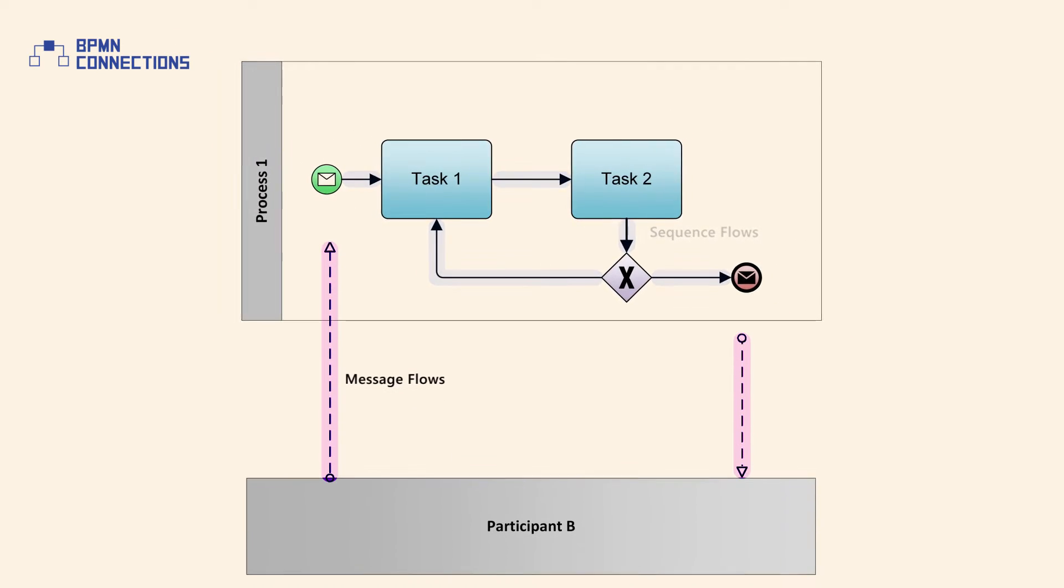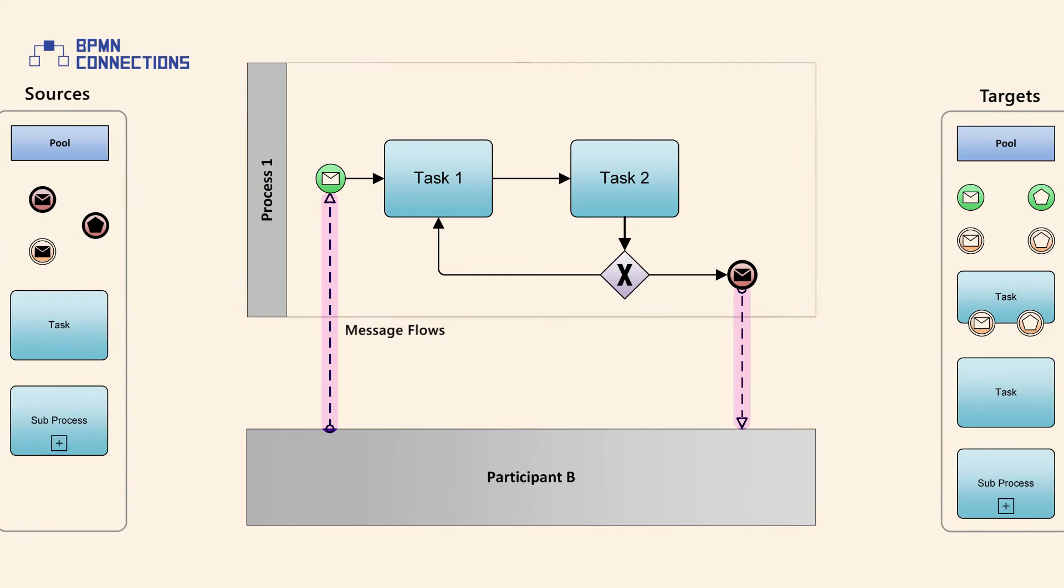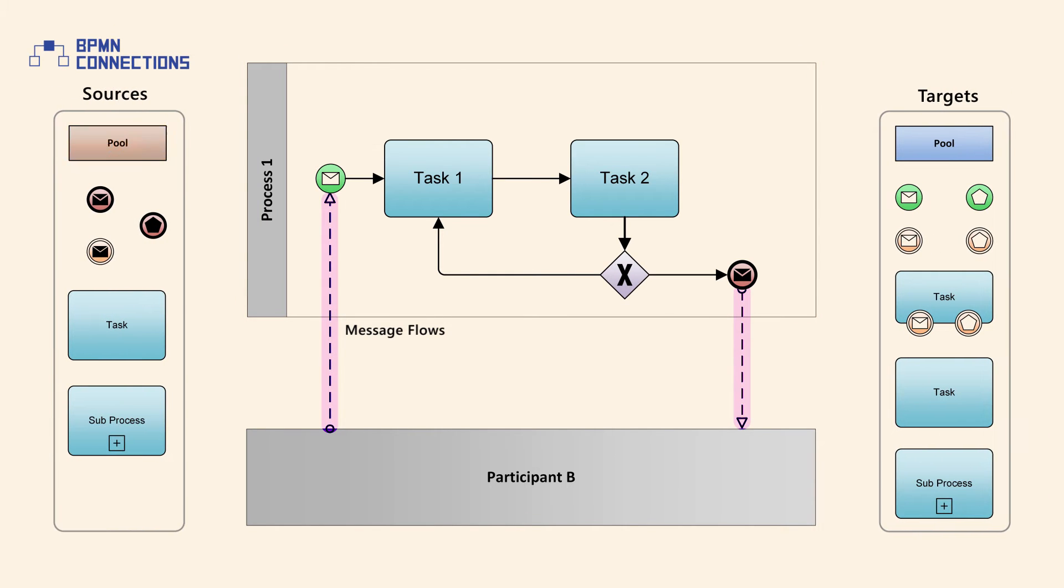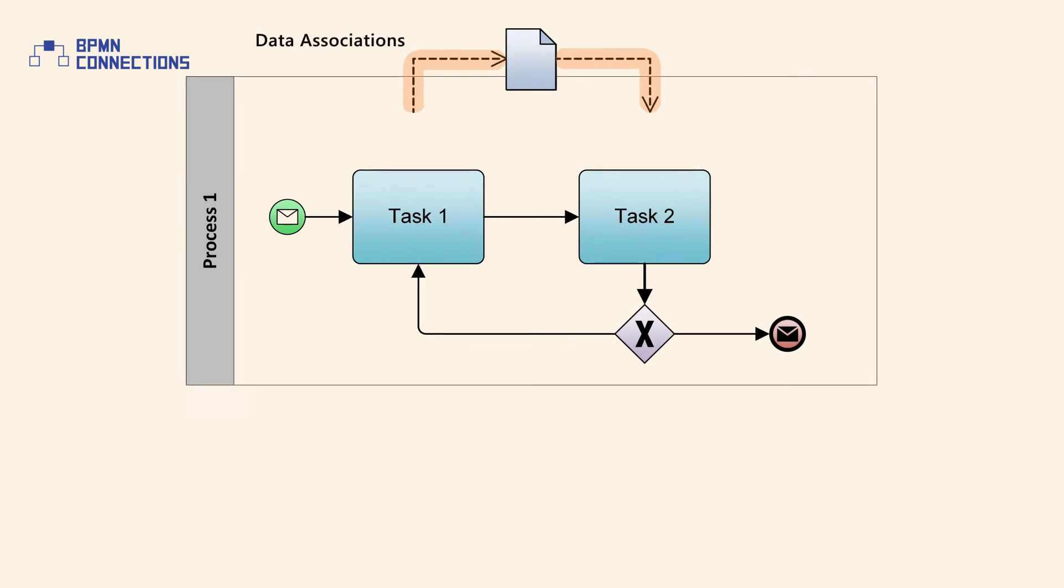In contrast, a message flow is used to show the flow of messages between two participants that are able to send and receive them. In BPMN, the two pools will represent the two participants. The source of message flows can be pools, events, and activities, and the targets are represented by corresponding elements.